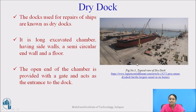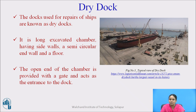Dry dock. In this figure, you can see the typical view of a dry dock. In a dry dock, we are manufacturing or repairing ships. It is a long excavated chamber having side walls, a semicircular end wall, and a floor. At this area, you can manufacture new ships or repair ships if any problem is there.